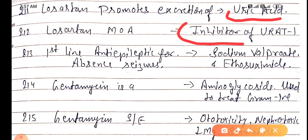First line anti-epileptics for absence seizures are sodium valproate and ethosuximide.